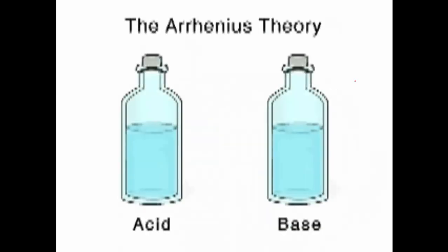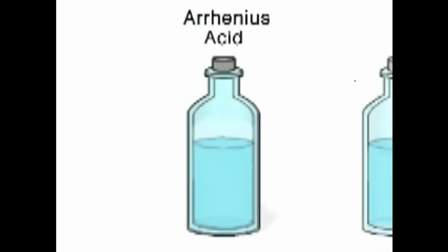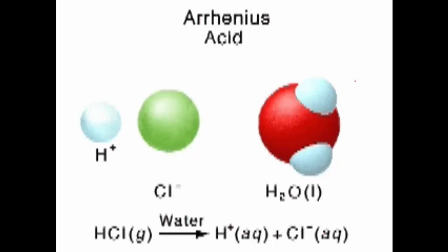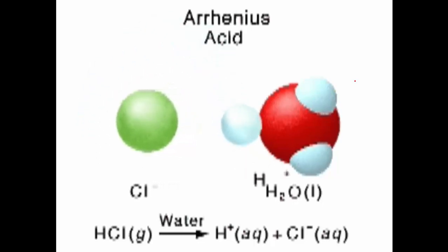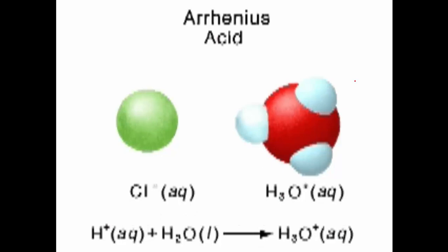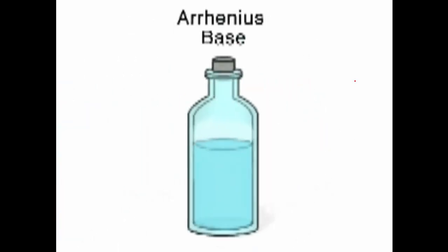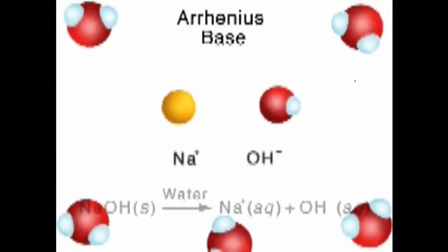There are two basic acid-base theories — there are actually three, but the third is more advanced and not really necessary at this level. Svante Arrhenius, a Swedish chemist, proposed one of the earliest definitions. By this definition, an acid is a substance that dissociates in water to produce hydrogen ions. Hydrogen ions are strongly attracted to the partially negative ends of water molecules and exist as hydronium ions. An Arrhenius base is a substance that dissociates in water to produce hydroxide ions.